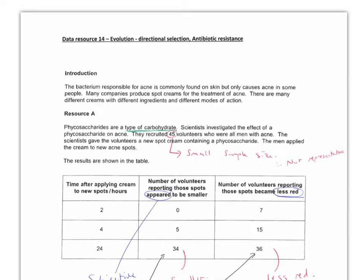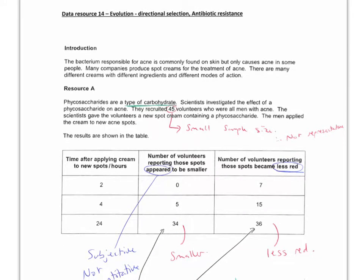First of all, just looking at what we've got, it tells us that phytosaccharide is a type of carbohydrate. There wasn't a question in your booklet about that, but they could have asked a question where you needed to use that knowledge. So the idea is, is it a monosaccharide, disaccharide, polysaccharide? You could have needed that information.